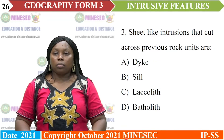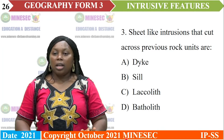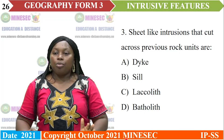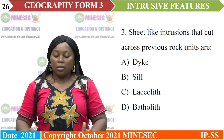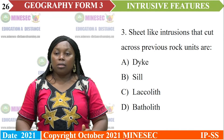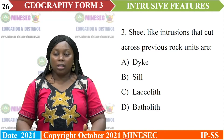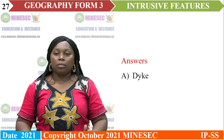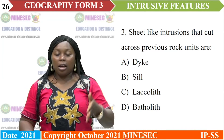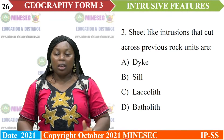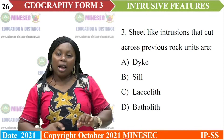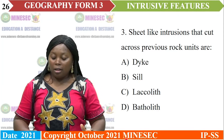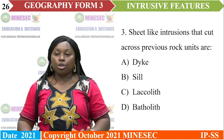Question three: sheet-like intrusions that cut across previous rock units are: A) dike, B) sill, C) lava plane, D) batholith. The right answer is A — dike — because dikes cut across bedding planes of sedimentary rocks, while sills lie along them. Laccoliths are dome-shaped features, and batholiths are huge features forming the roots of mountains.